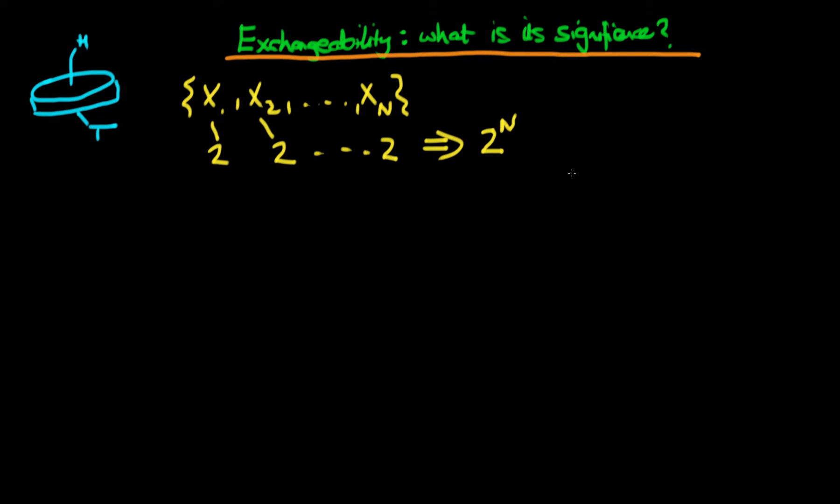If we hadn't done much probability before, we might ask: to describe the joint probability of any one of these 2 to the n outcomes, do we need to have a specific probability for each outcome? Thankfully, exchangeability provides the answer, which is in fact no.